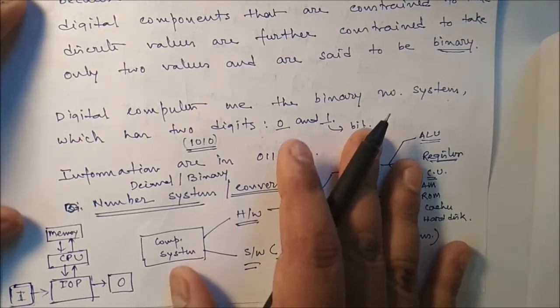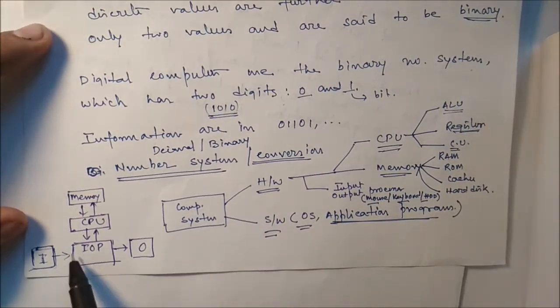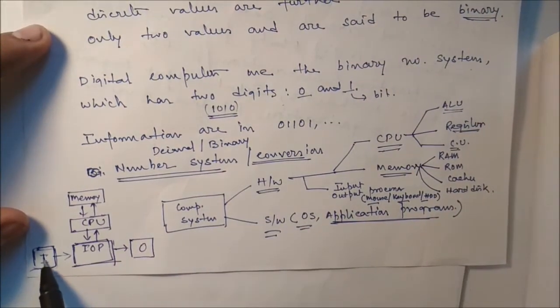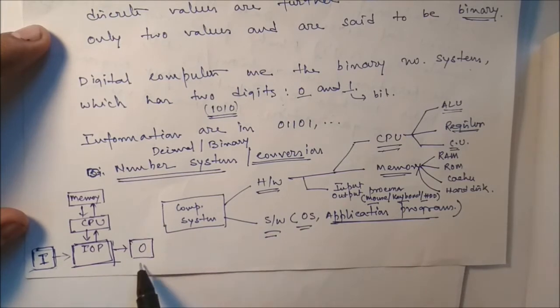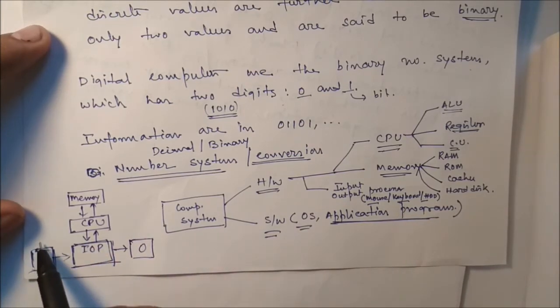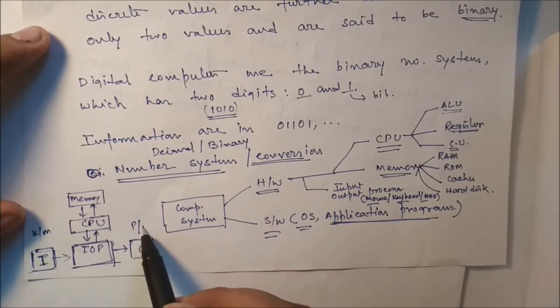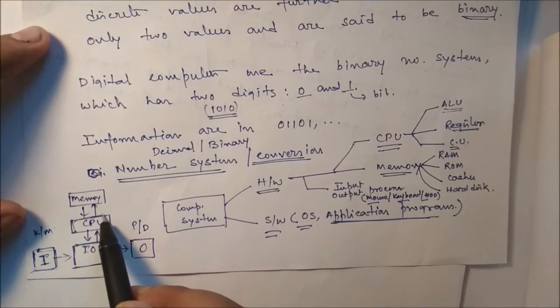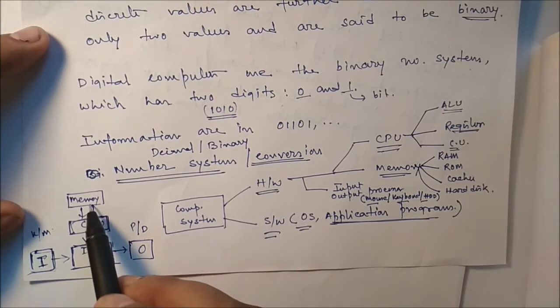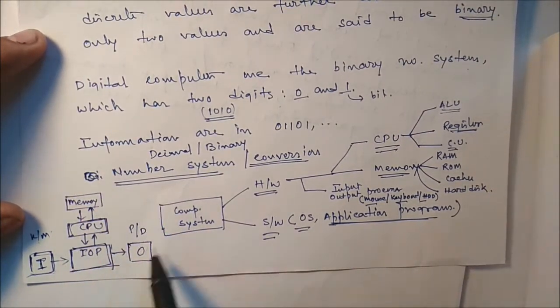This is a block diagram of the basic computer system. Input/output - keyboard, mouse in input, printer and display system in output. CPU and memory. This is the basic computer system.